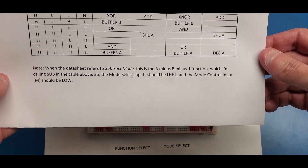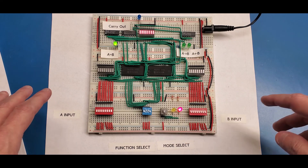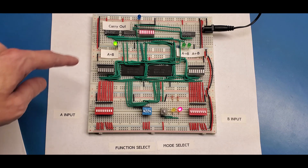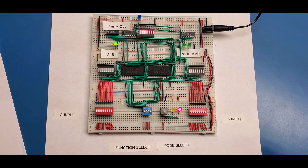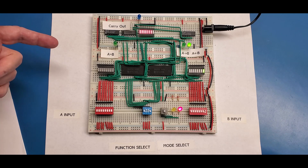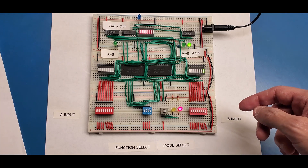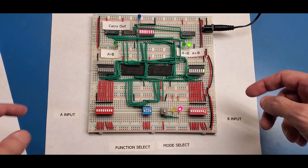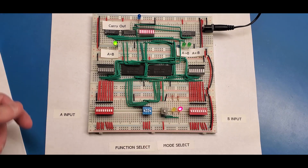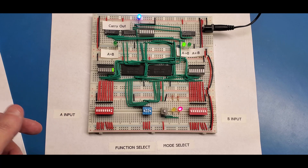So when we're in subtract mode, the mode select should be low-high-high-low and the mode control input should be low — that's how we have it set here. Immediately by looking at the two values, we can see there's nothing on the a register and nothing on the b register, so the a equals b LED is on, indicating equality. If I put any value in the b register, such as just a one, the a equals b LED goes off because zero is not equal to one, and the LED indicating a is less than b comes on — which is true, zero is indeed less than one.